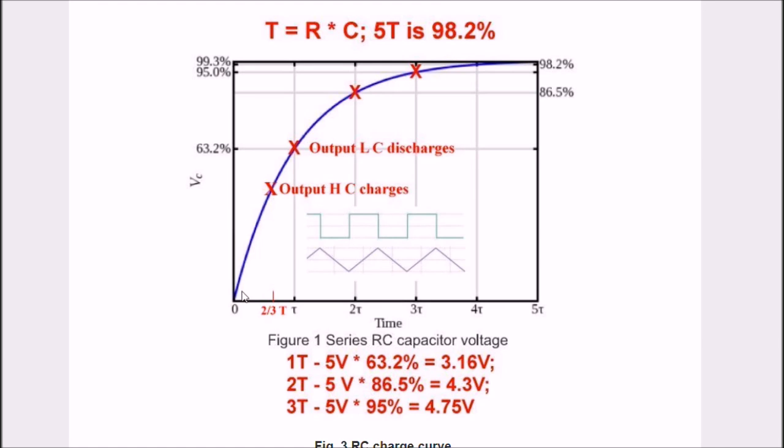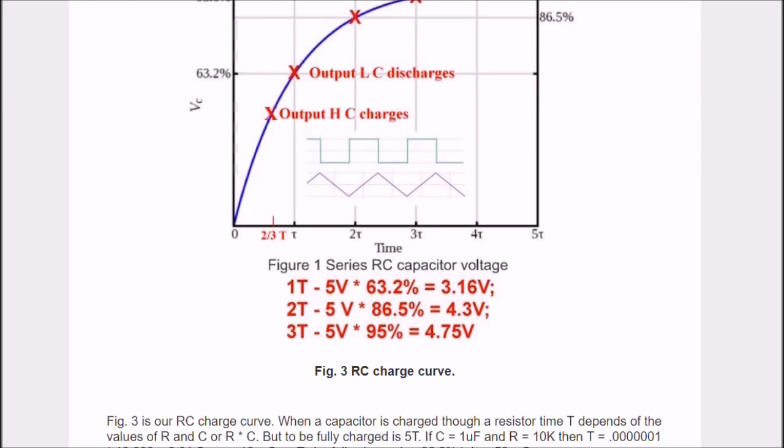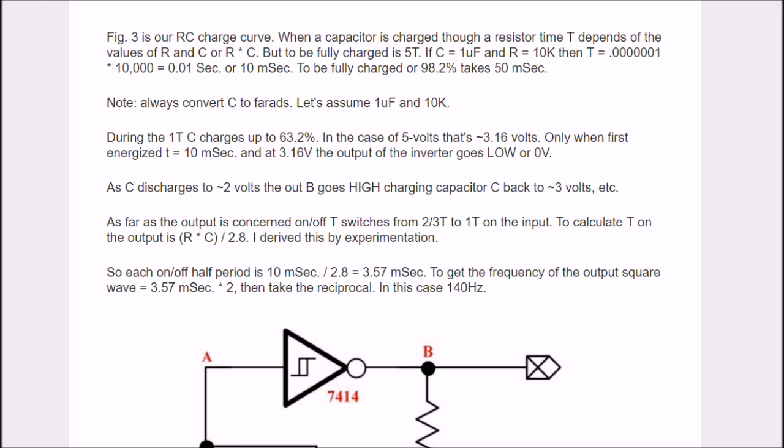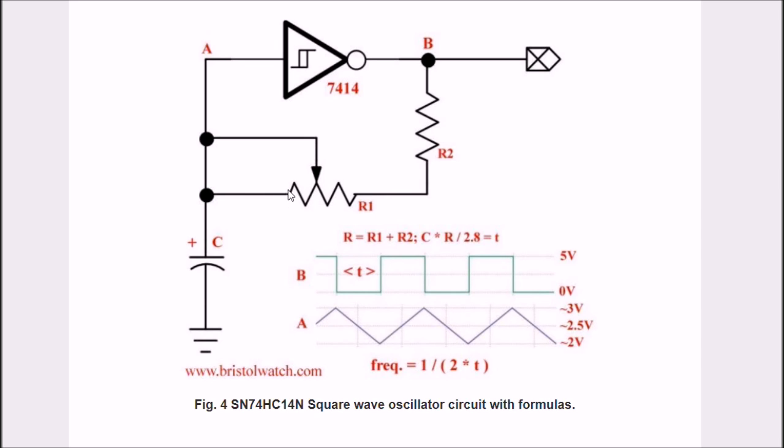Alright, referring back to our charge curve again, we have R times C is from 0 to 63%. So, to go from about 2 thirds T to T, approximately, is not going to be R times C by itself. I'm going to have a percentage. By experimentation, I found out that if you take R times C and divide 2.8, you will get your T. If you multiply that T times 2, that's the time or period for the whole square wave. And if you take the reciprocal of that value, you can get the frequency.